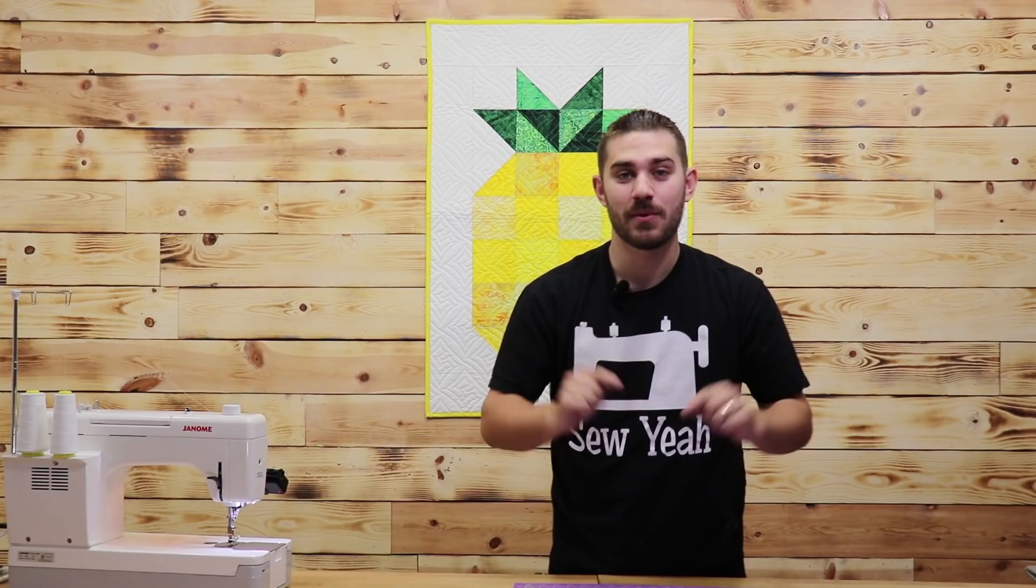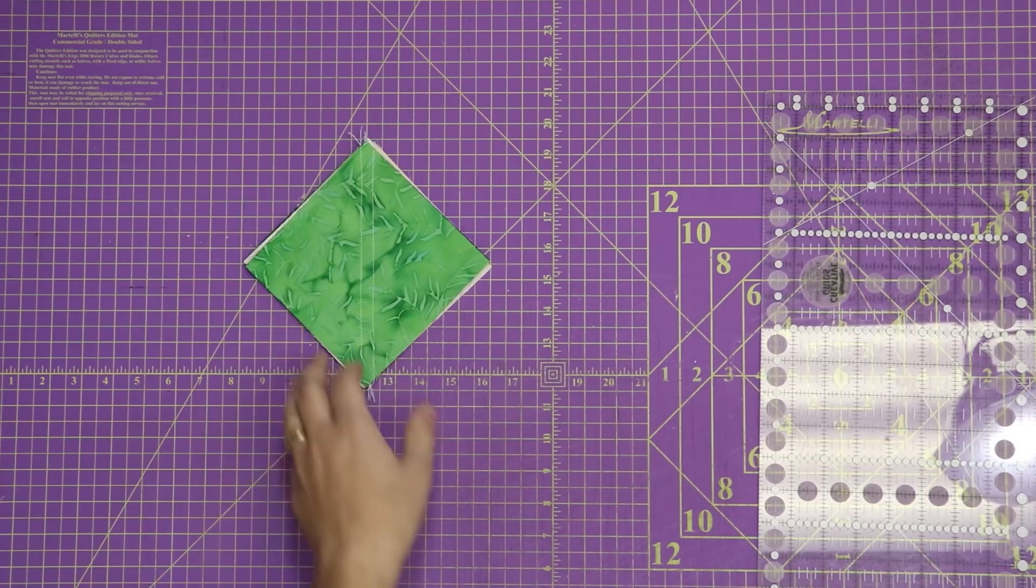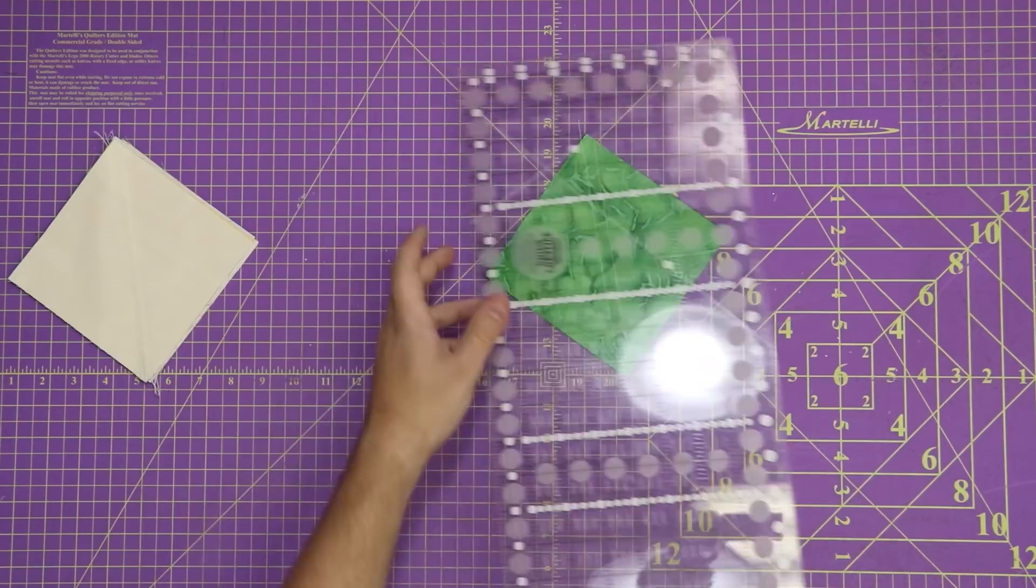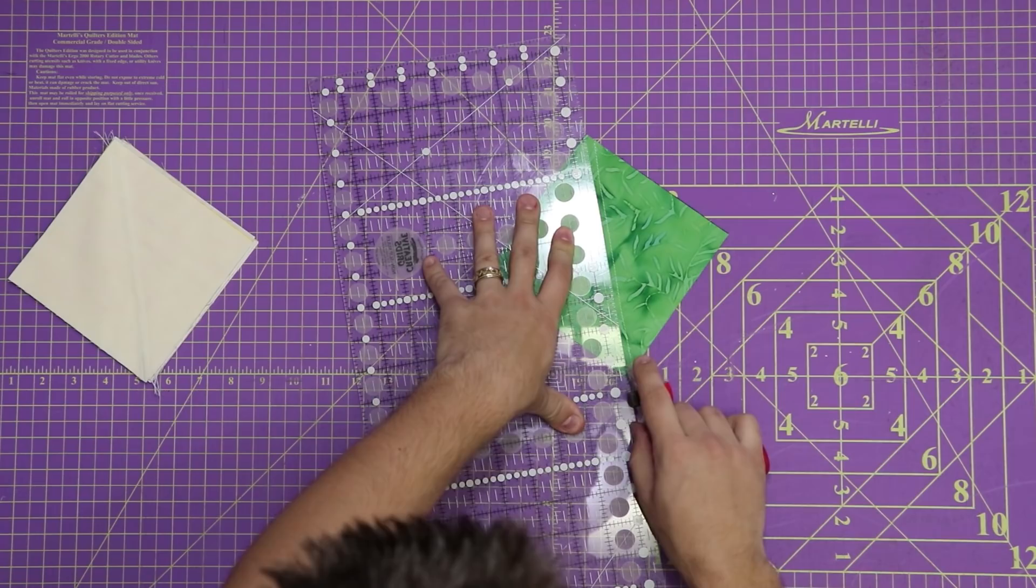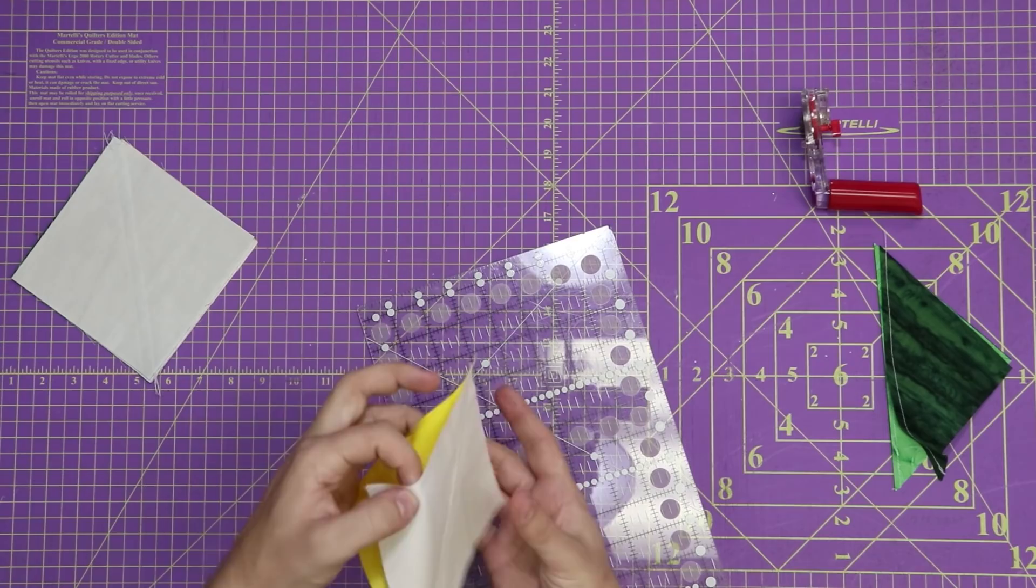Now that we have them all sewn it's time to cut them. What I'm going to do here is take one of my half square triangles, put my ruler on it and cut on the same line that I marked. We'll put these aside because in just one second we're going to have to iron all of these to the dark side. So let's just cut these real quick.